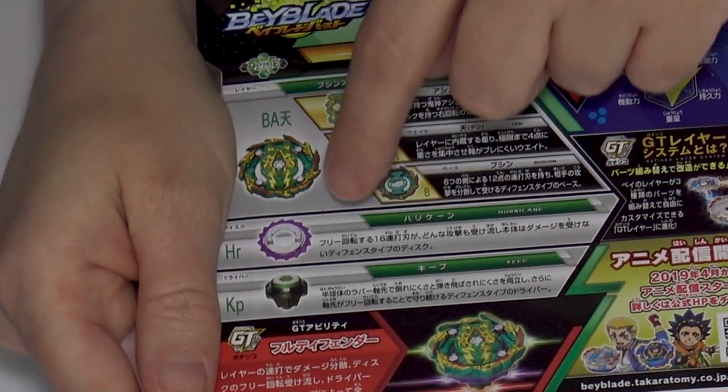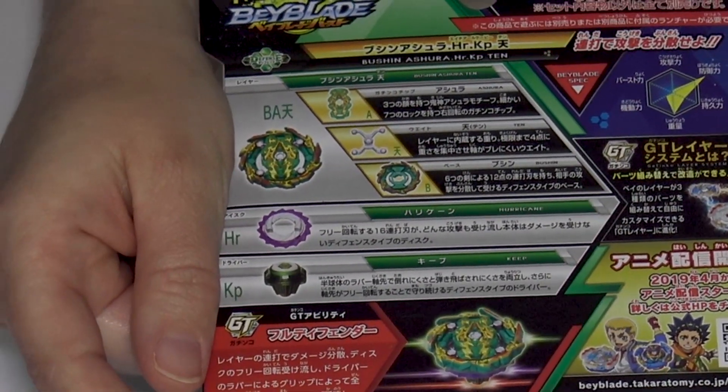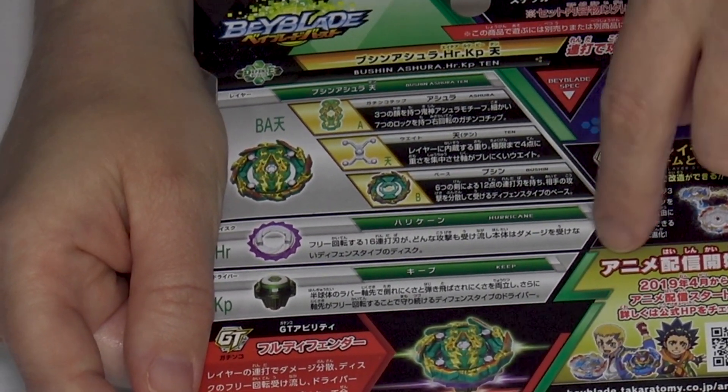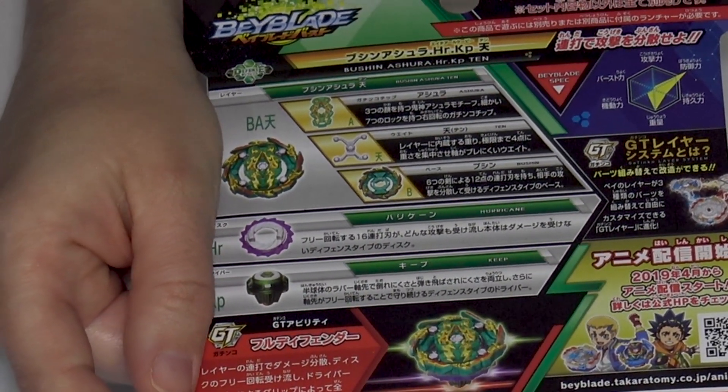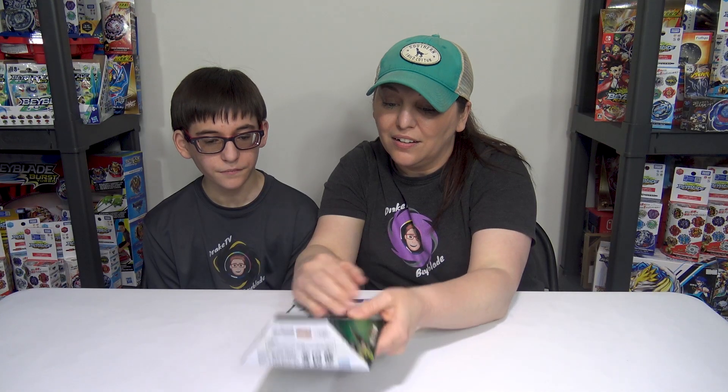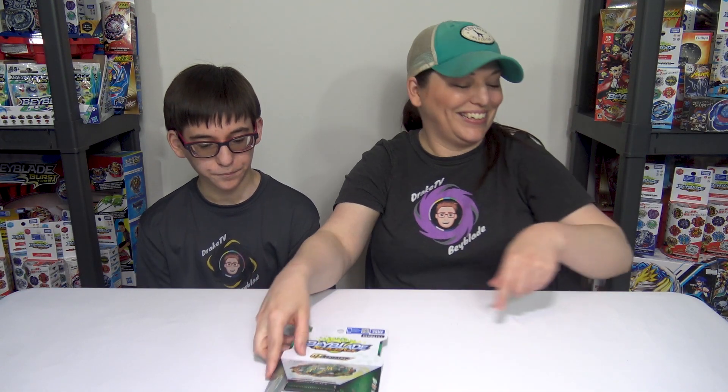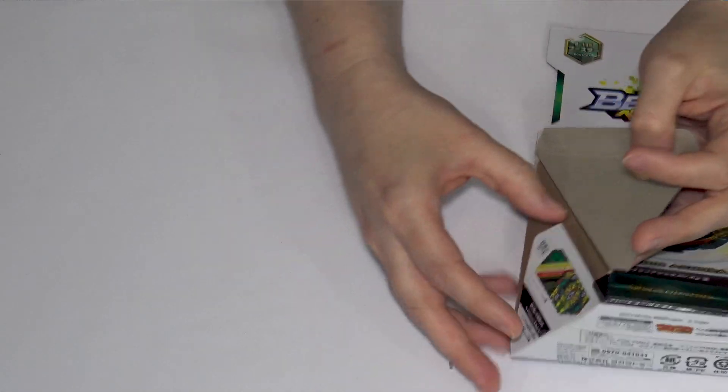The Forged disc is called Hurricane. That is very reminiscent of a saw blade, like Wyvern. Then we have Keep, which is the driver. A nice defense type combo here. You ready to get it out? Let's do it.